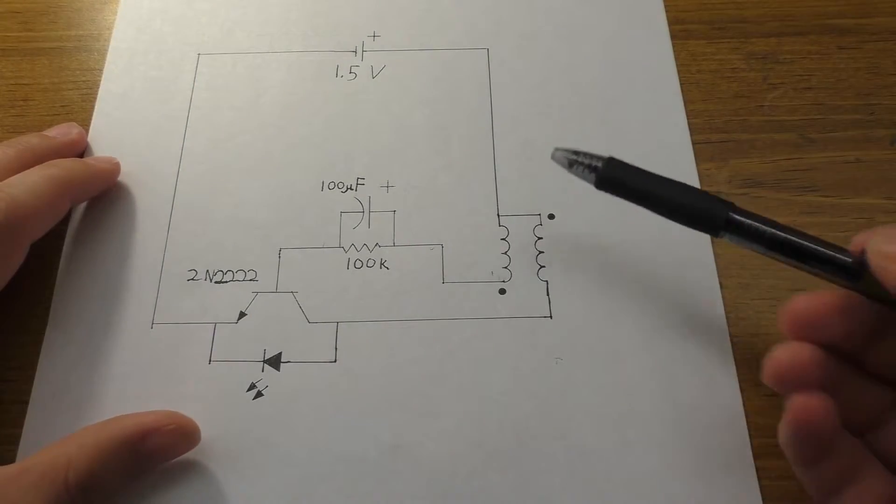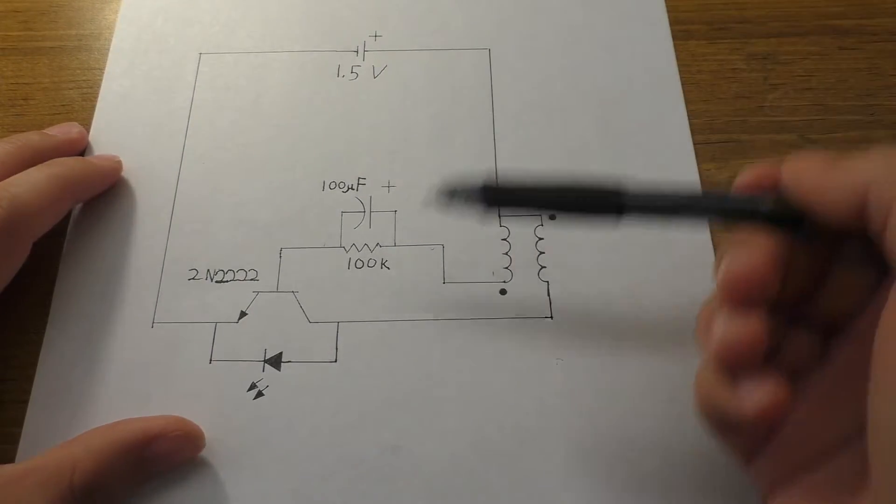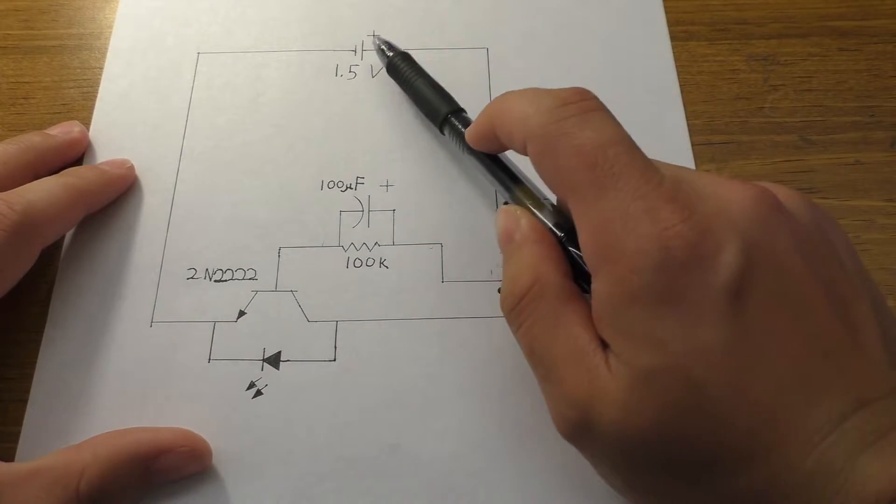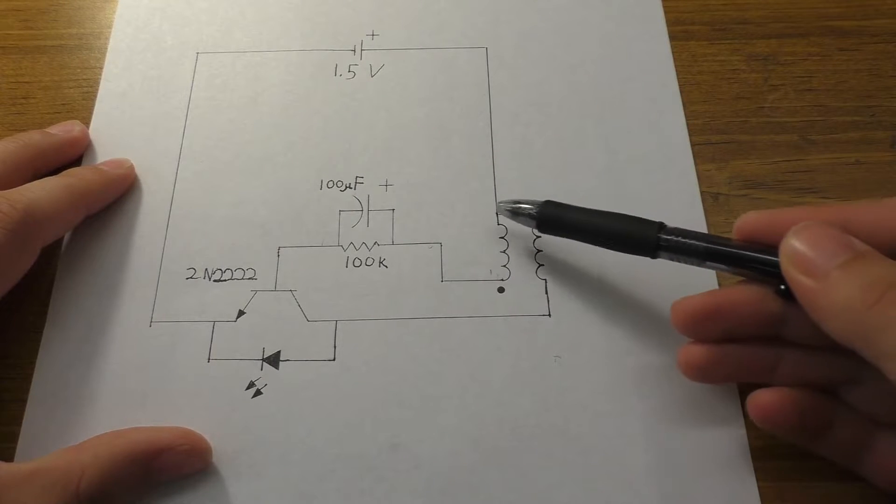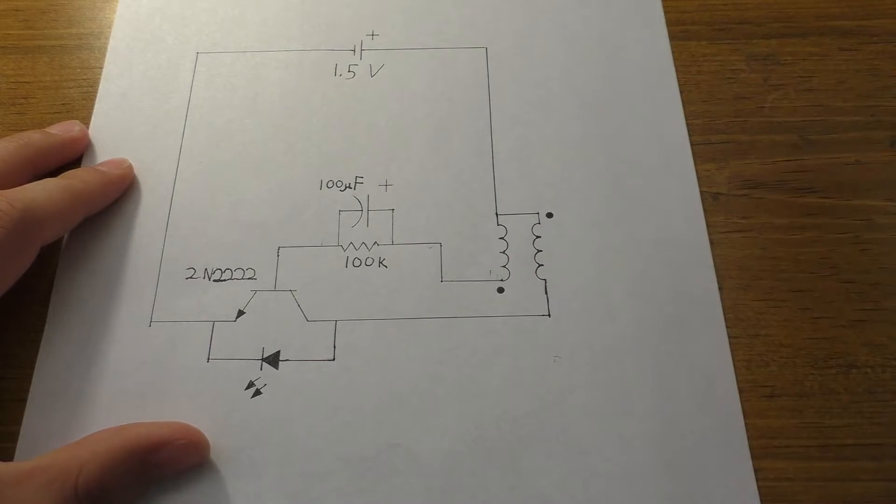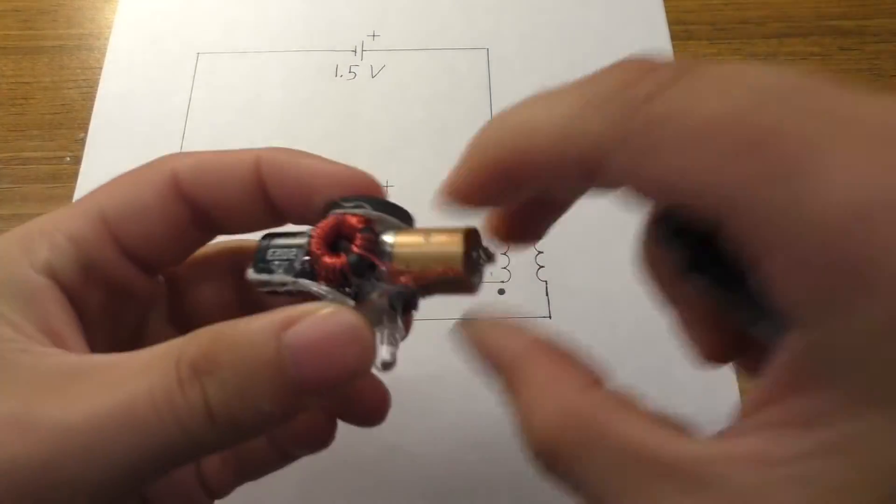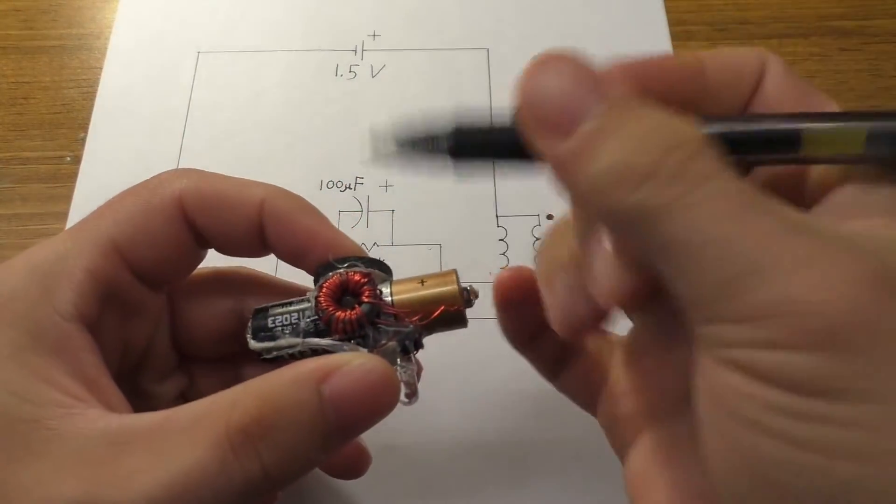All right, so this is the finished schematic or at least as I remember the schematic. So we got a one and a half volt battery here. The positive of that's going straight into your standard jewel thief transformer. This one or both of these, I think they have, I don't know, about 10 turns or so. Let's see.